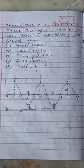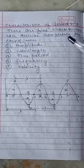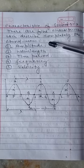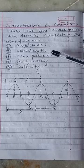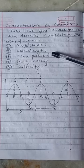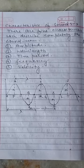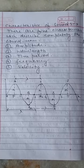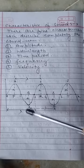The five characteristics are: first, amplitude; second, wavelength; third, time period; fourth, frequency; and fifth, velocity.